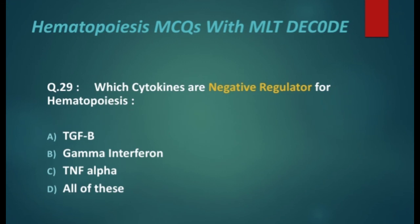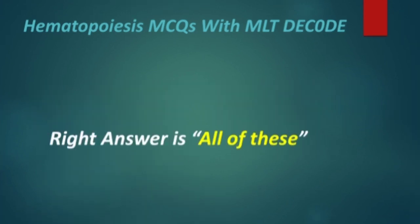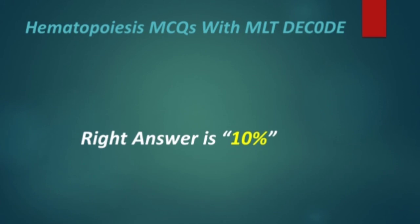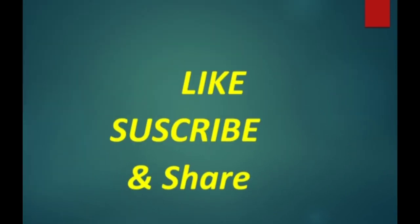Next: which cytokines are negative regulators for hematopoiesis? Options are TGF-beta, gamma interferon, TNF-beta alpha, and all of these. The right answer is all of these. Next: the liver produces what percentage of erythropoietin for erythropoiesis? Options are 5%, 10%, 20%, and 90%. The right answer is 10%. Dear students, please like, subscribe, and share our channel. Allah Hafiz.